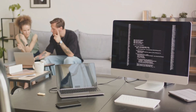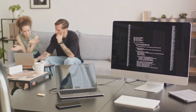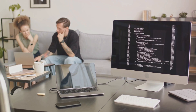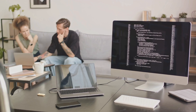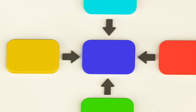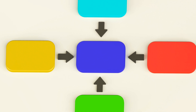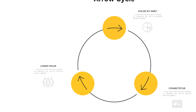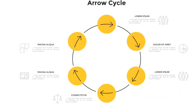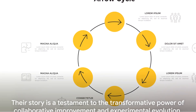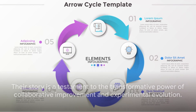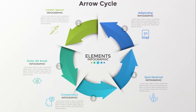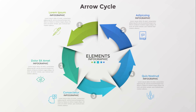They embraced failure as an opportunity for learning and growth. The team started implementing small changes, observing the results, learning from them, and iterating their processes accordingly. This continuous cycle of testing, learning, and evolving became their modus operandi. As a result, they not only improved their software development process, but also fostered a culture of shared responsibility and continuous learning. Their story is a testament to the transformative power of collaborative improvement and experimental evolution. Remember, continuous collaborative improvement is the heart of every Agile process.